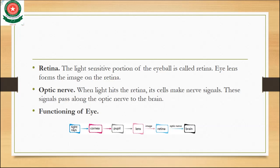To repeat: when light hits the retina, the cells automatically generate nerve signals, and these signals pass along the optic nerve to the brain. In easy words, the optic nerve connects the eye with the brain.